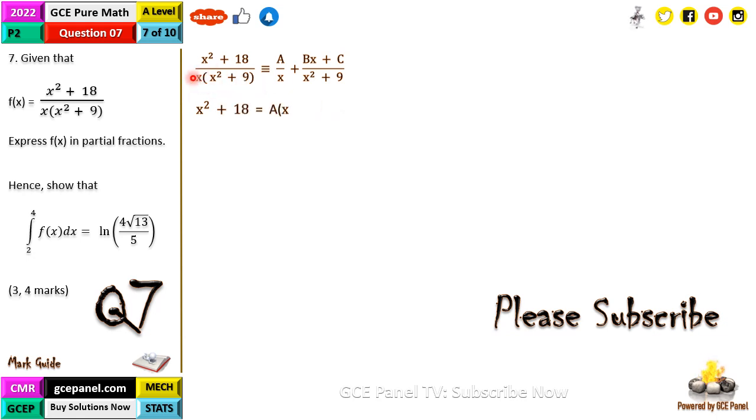Now we multiply all through by this denominator on the left-hand side, and we'll be left on the left-hand side with x squared plus 18 equal to on the right-hand side A times the denominator, which gives us A into x squared plus 9. When we multiply by this, the denominator cancels out and we're left just with the numerator Bx plus C times x. We can use the cover-up method, but it's going to be difficult here, so we are going to work with equating coefficients.